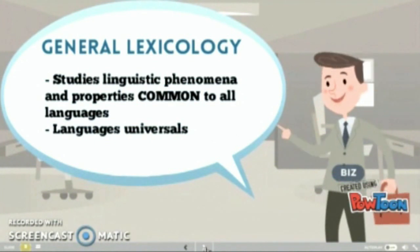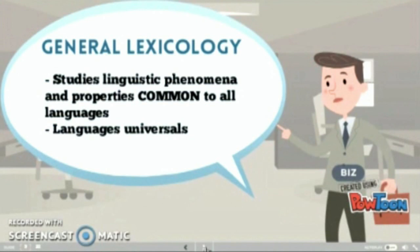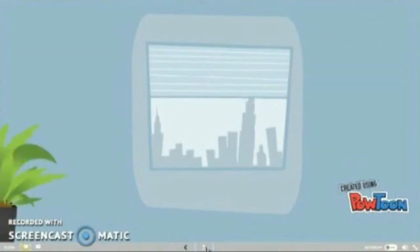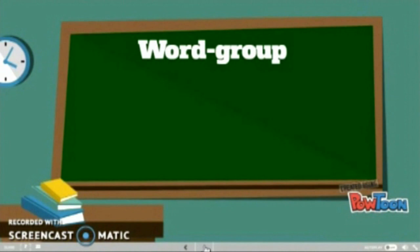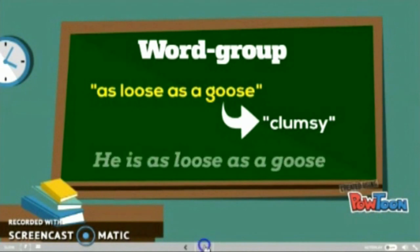The next is the definition of the term word. A word is the basic unit of vocabulary, the smallest unit of a language. The next is the word group. A word group denotes a group of words which exist in the language as a ready-made unit. It has the unity of meaning and the unity of syntactical function. For example, 'as loose as a goose' means clumsy — for example, 'he is as loose as a goose.'